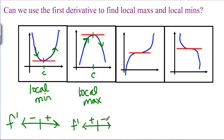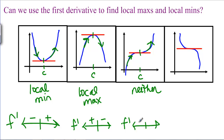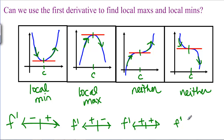If you have a critical point C where your function is increasing on both sides, this should be neither a local maximum nor a local minimum — this corresponds to an F-prime number line that is positive on both sides. Similarly, if you're decreasing on both sides of your critical point, that would also be neither, corresponding to an F-prime number line of negative-negative.